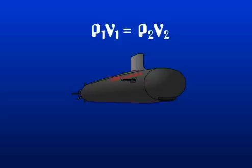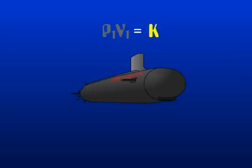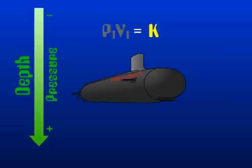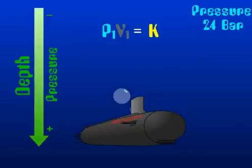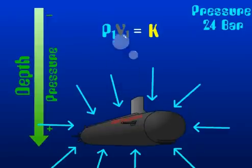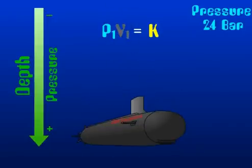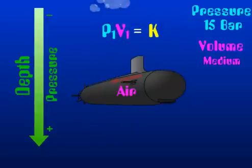One side of the gas law equation will represent the submarine; the other will represent our constant. As you might know, the deeper you go in the water, the more pressure there will be. This pressure exists because the water is pushing in all directions on the submarine. The other part of the equation is the volume of air in the submarine.